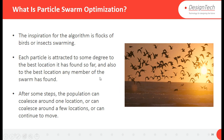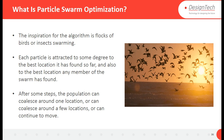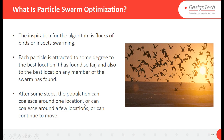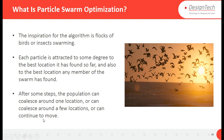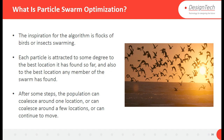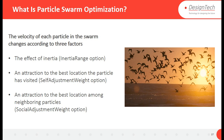Each particle is attracted to some degree to the best location it has found so far, and also to the best location any member of the swarm has found. After some steps, the population can collapse around one location, around a few locations, or continue to move. If they collect at one location, it means they found the optimized solution — the destination. That is how Particle Swarm Optimization works.